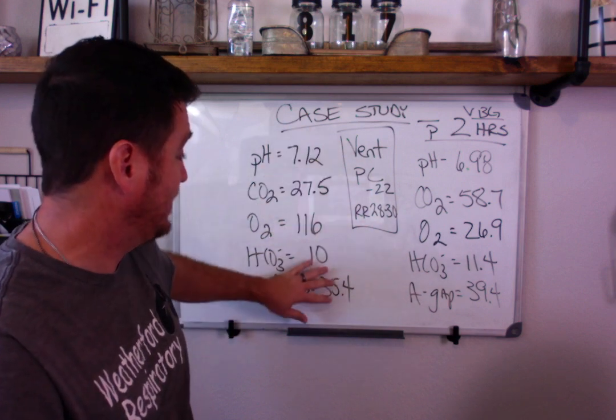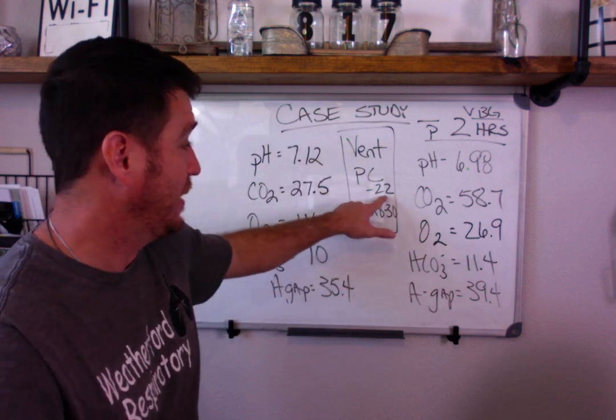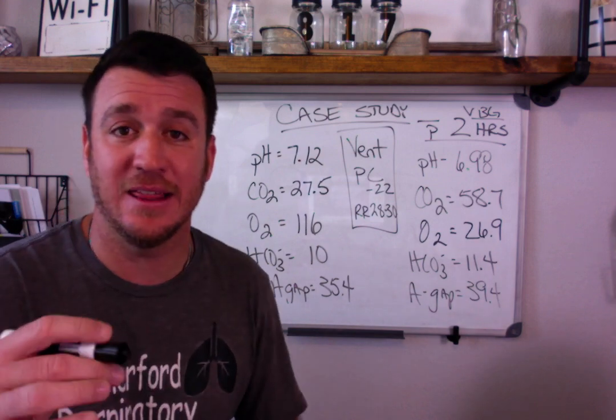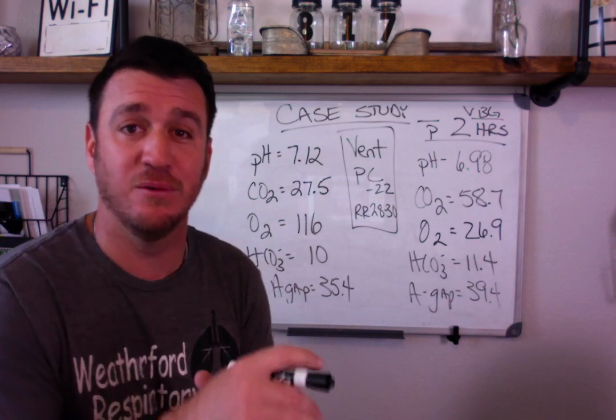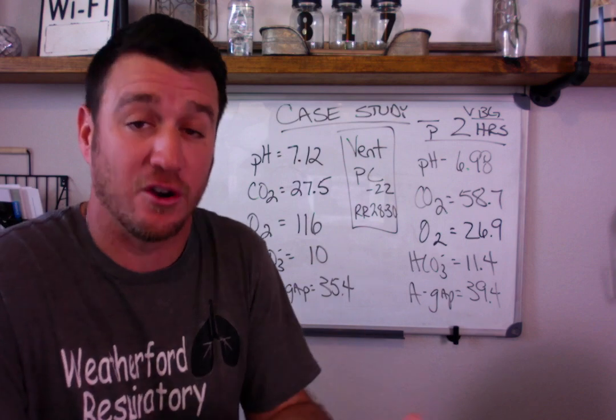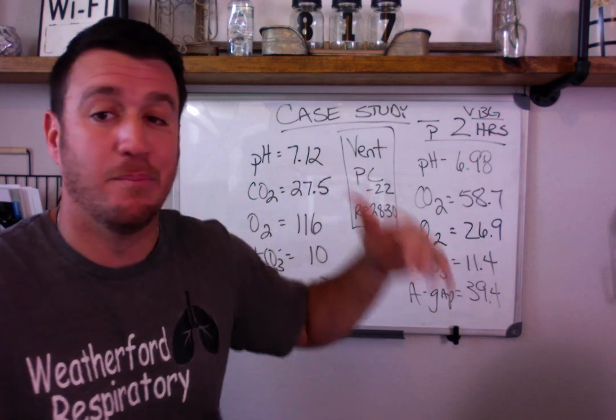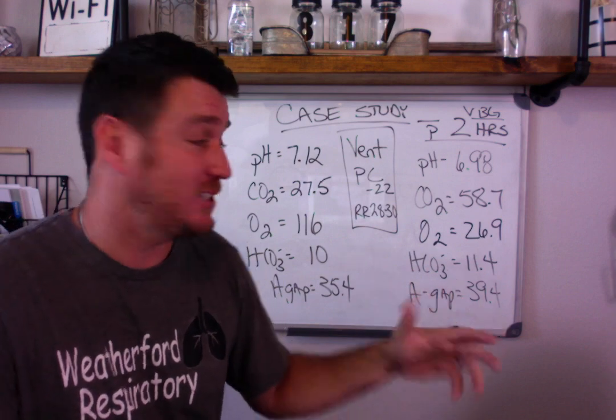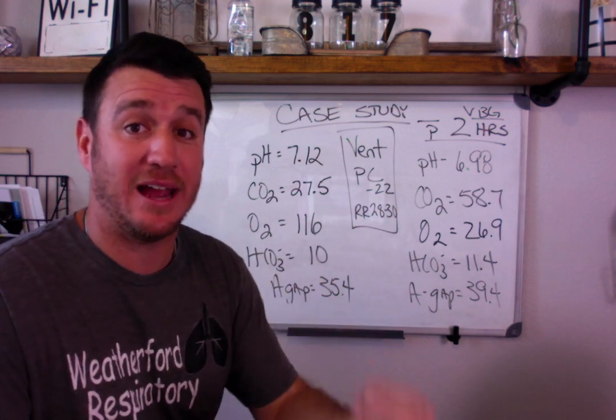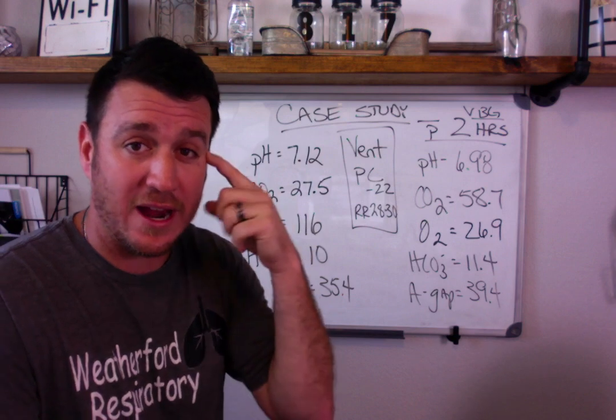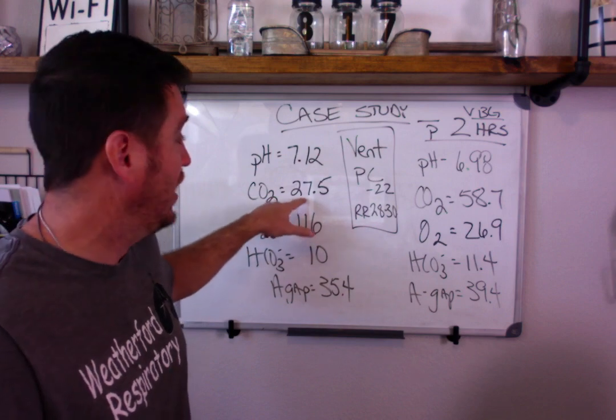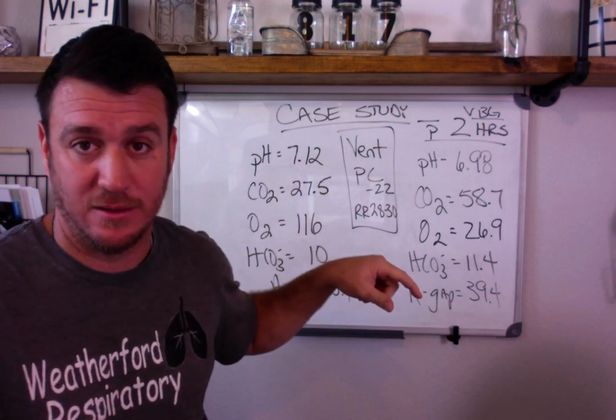Now, at the time this gas was taken, the patient was on pressure control at a PIP of 22 with a rate of 28 to 30. The rate of 28 to 30 tells me that the patient is breathing over the ventilator. If it was set, there would just be one number. But 28 to 30 tells me that the respiratory rate is varying, which means the patient is triggering these pressure control breaths above what is the set rate. And that makes sense because we see a low CO2 right here.